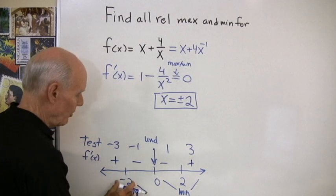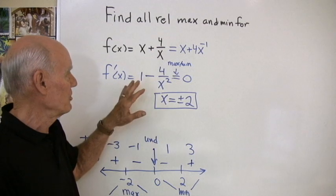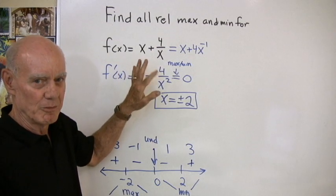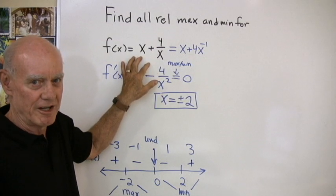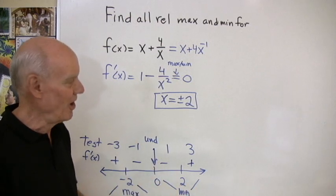So the point x equals negative 2, and the point x equals 2, tell me that I'm going to have a relative maximum or minimum on this graph. So to find out what those actual numbers are,